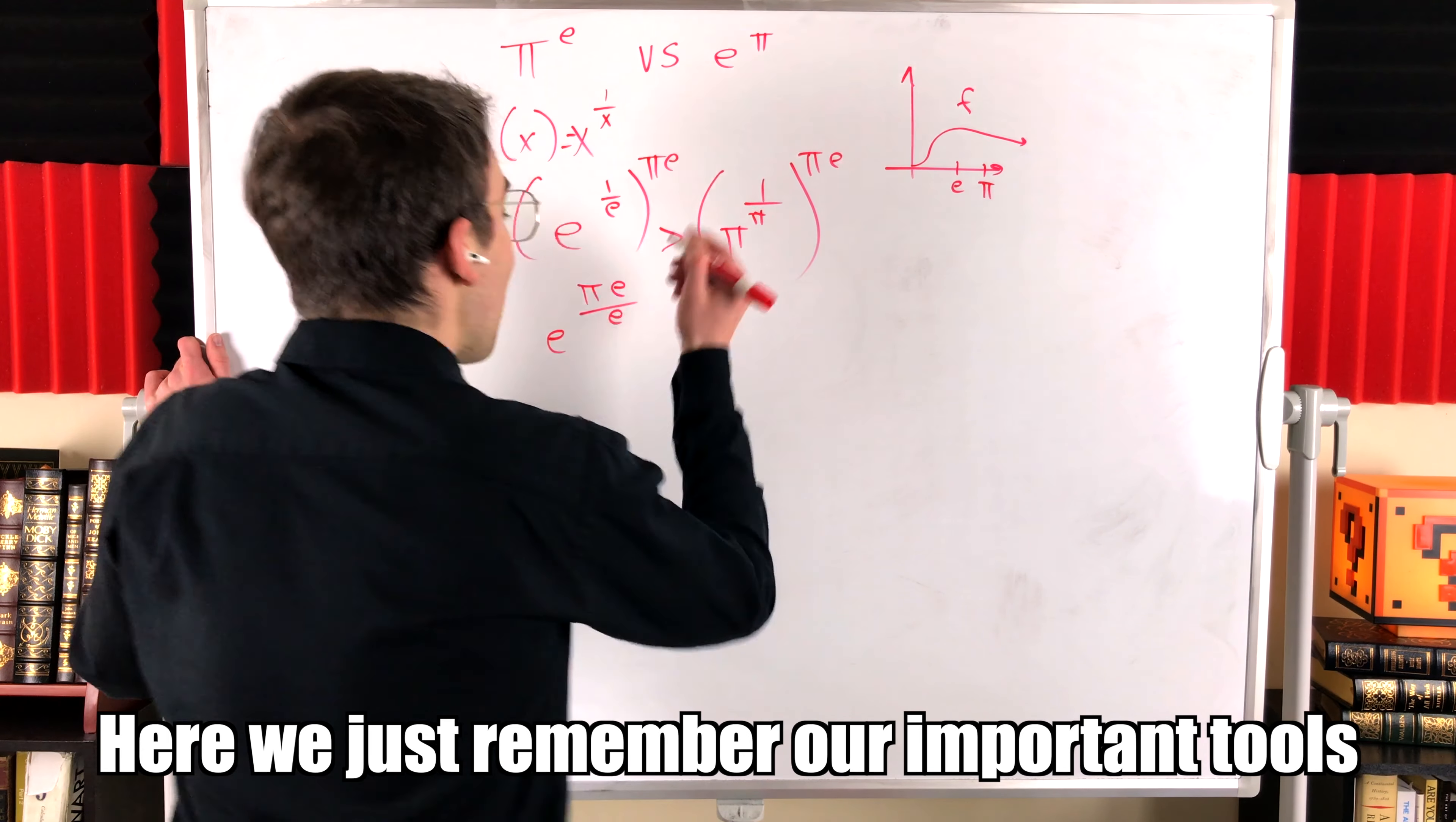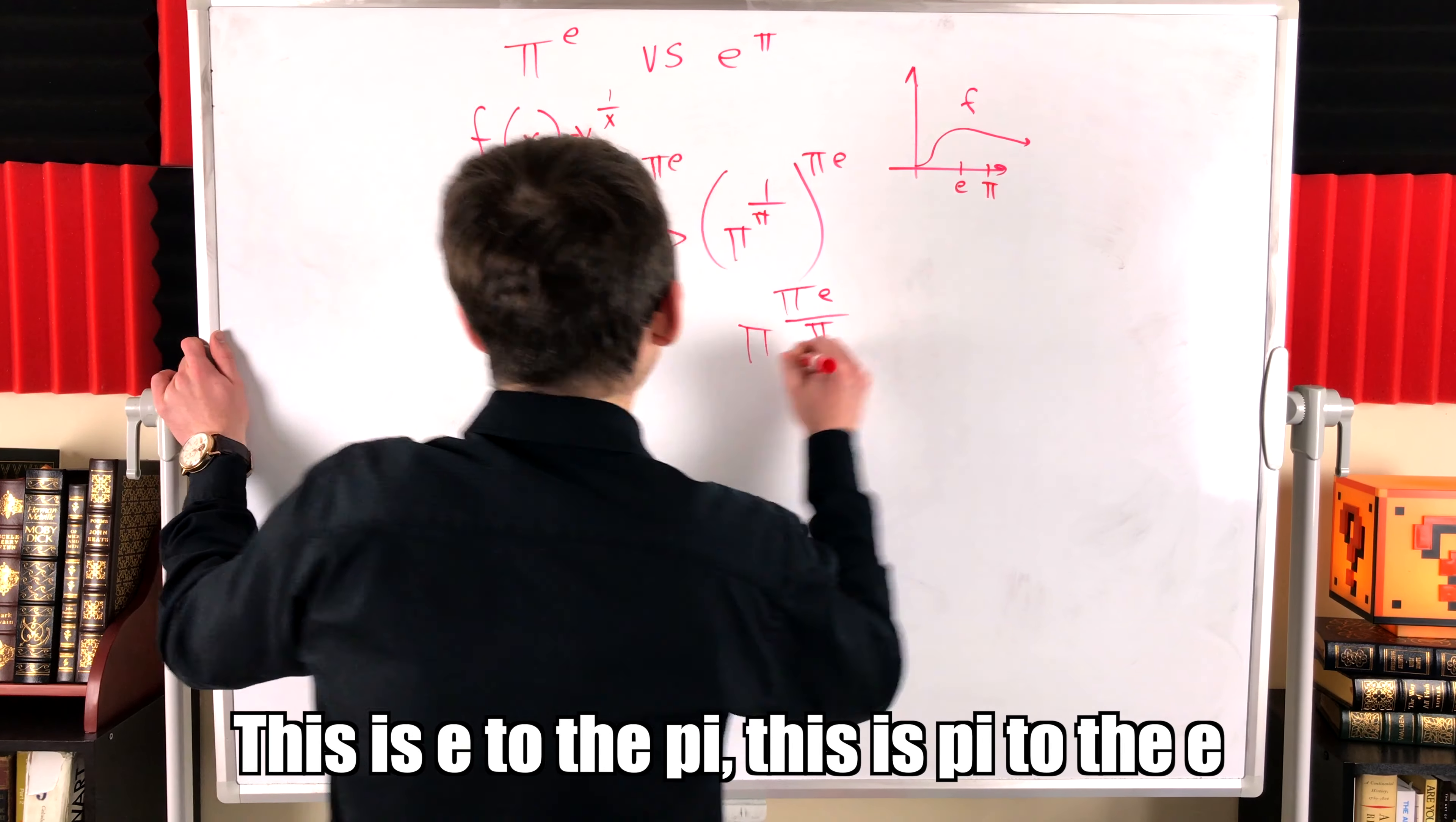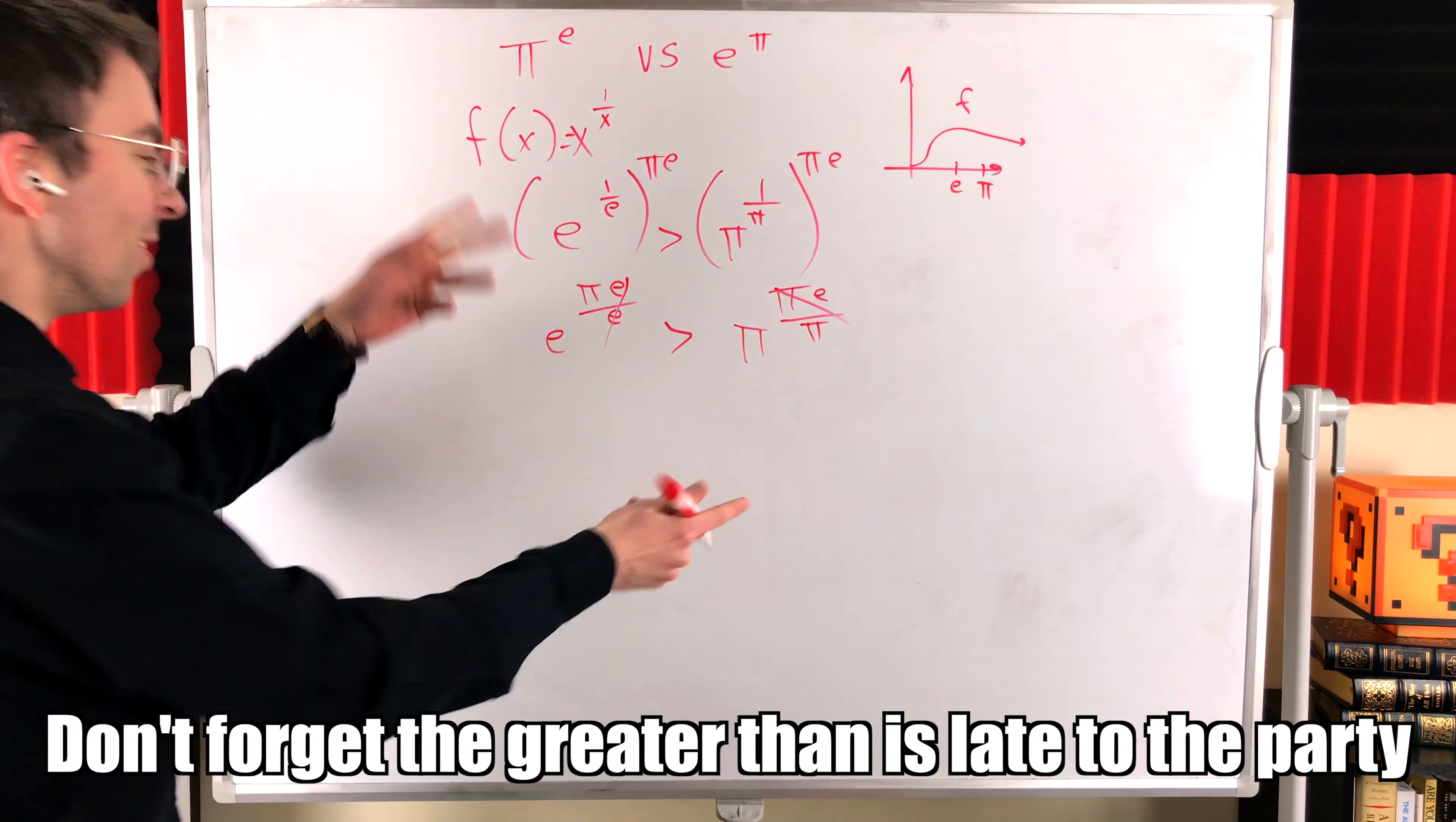Here we just remember our important tools. We can simplify this with those old exponent rules. This is e to the pi. This is pi to the e. Don't forget the greater than is late to the party.